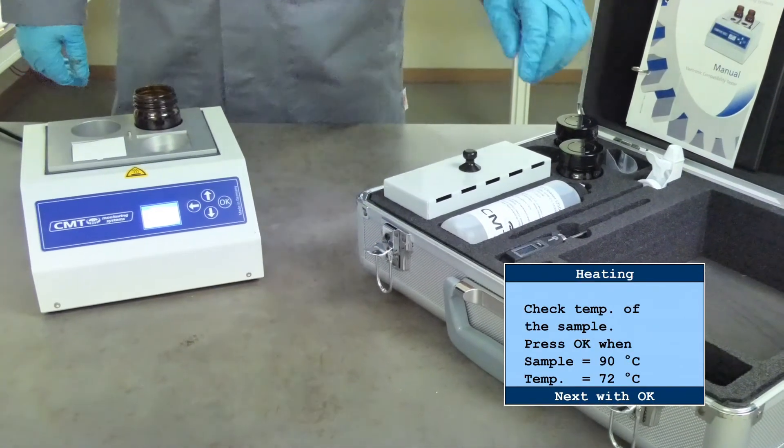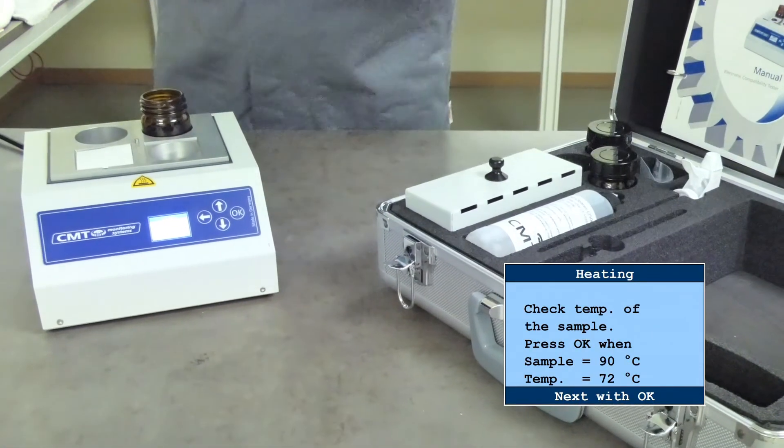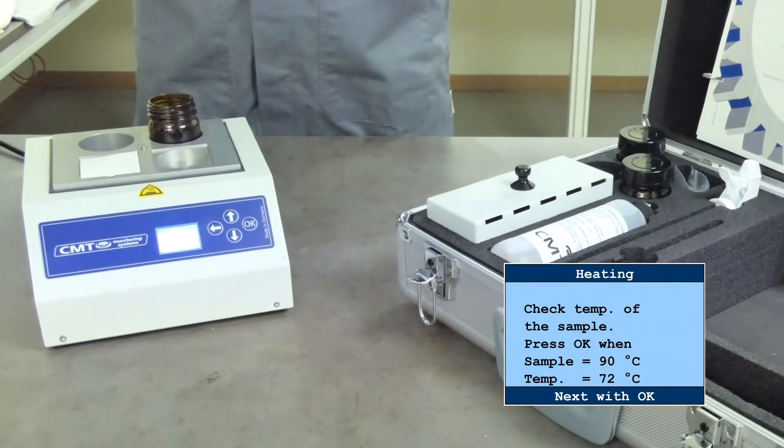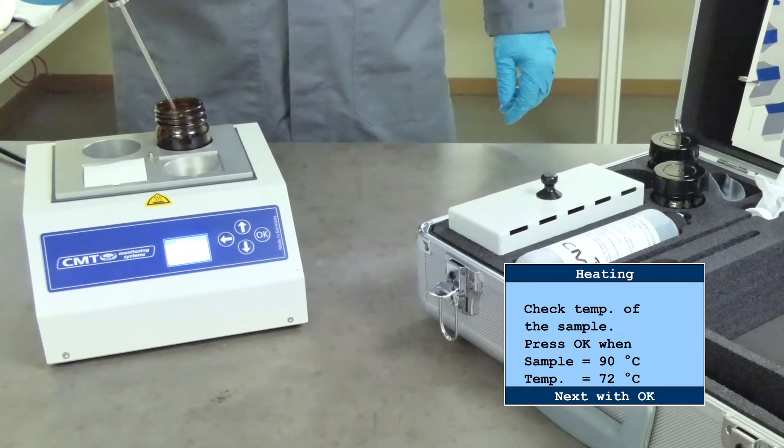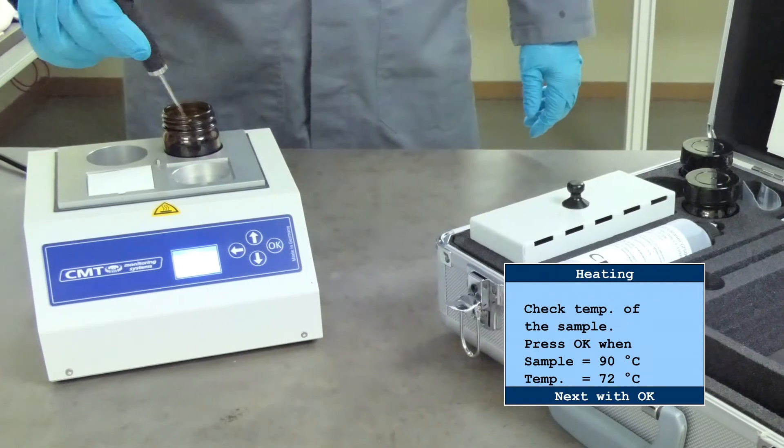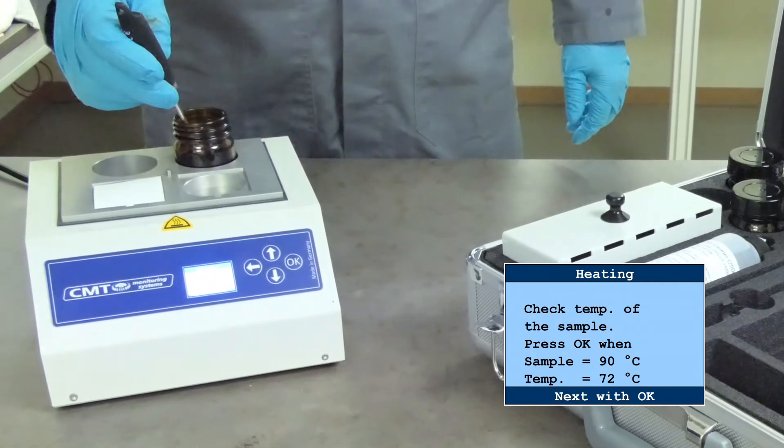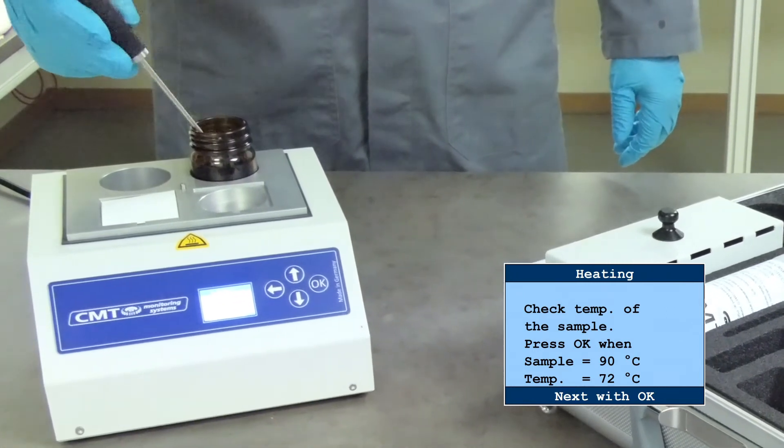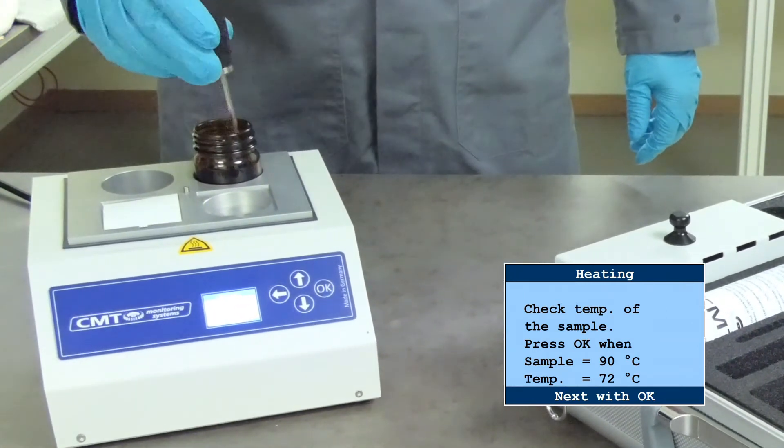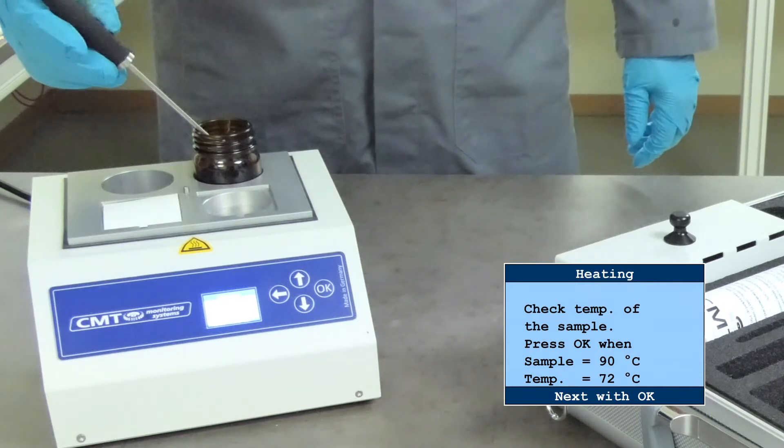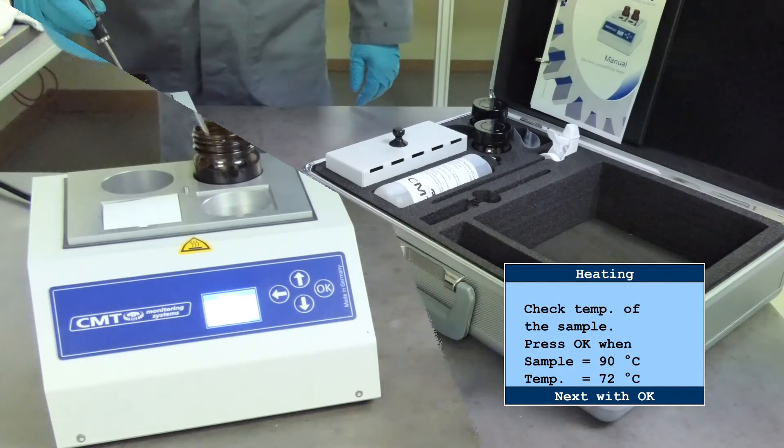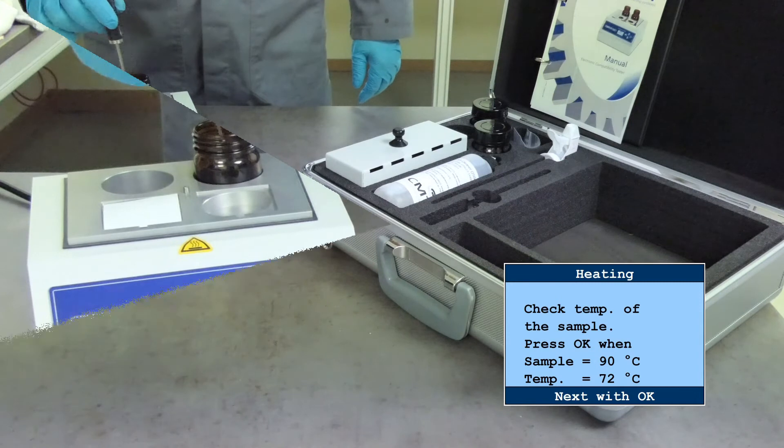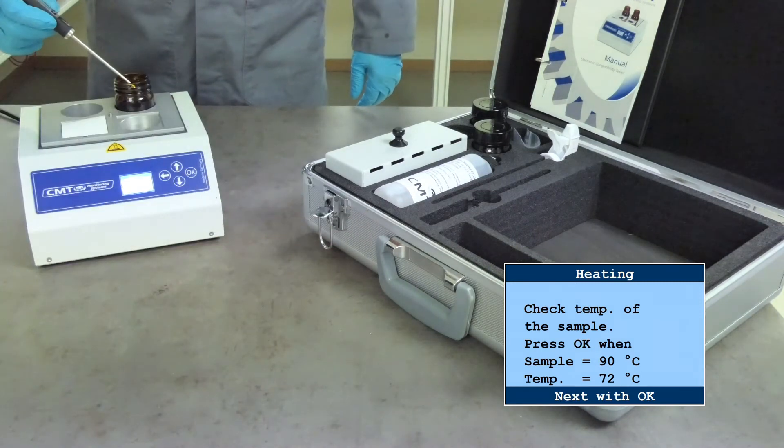Heat the sample evenly by stirring the sample with the thermometer and check temperature occasionally until a temperature of 90 degrees is reached. Please note, the display indicates the temperature of the heating plate only. Use the thermometer supplied with the kit to check the sample's temperature. Press OK when the sample has reached 90 degrees centigrade.